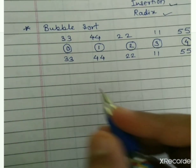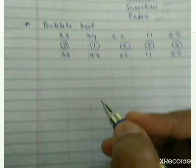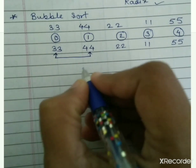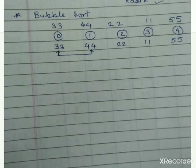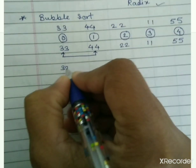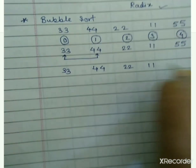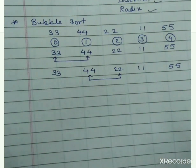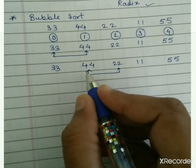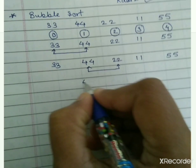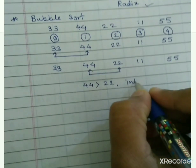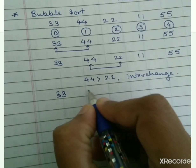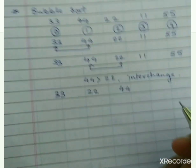In Pass 1, we compare the 0th element with the first. Comparing 33 with 44: 33 is less than 44 so the sequence remains the same — 33, 44, 22, 11, 55. Now comparing the first element with the second: 44 compared with 22. Since 44 is greater than 22, we have to interchange them, swapping 22 and 44.